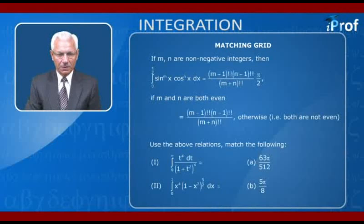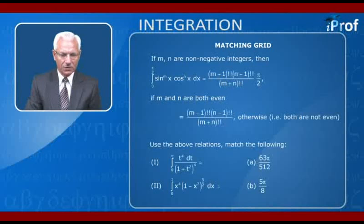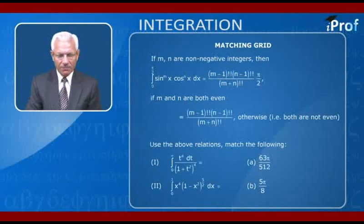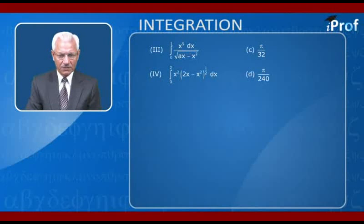Match the following: (1) ∫₀^∞ t⁴/(1+t²)⁴ dt; (2) ∫₀¹ x⁴(1−x²)^(π/2) dx; (3) ∫₀¹ x^π / √(x−x²) dx; (4) ∫₀² x²(2x−x²)^(1/2) dx. The options are: (a) 63π/20, (b) 5π/8, (c) π/32, (d) π/240.